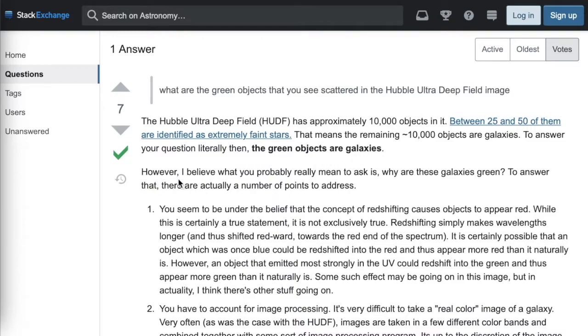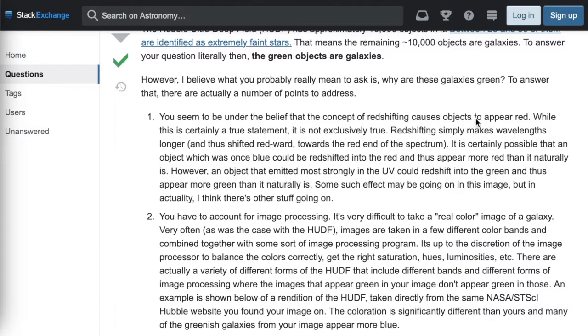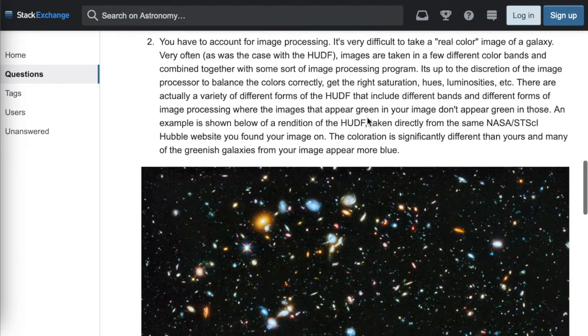To answer your question, little then, the green objects are galaxies. However, I believe what you probably mean to ask is why are these galaxies green? To answer that, there are actual number of points to address. You seem to be under the belief that the concept of redshifting causes objects to appear red. While this is certainly a true statement, it is not exclusively true. Redshifting simply makes wavelengths longer and thus shifted redward towards the red end of the spectrum. It is certainly possible that an object that was once blue could be redshifted into the red and thus appear more red than it actually is. However, an object that emitted most strongly in the UV could redshift into the green and thus appear more green than it actually is. Not according to the other website. Some such effect may be going on in this image, but in actuality, I think there's other stuff going on.